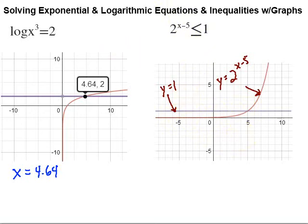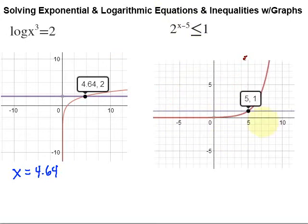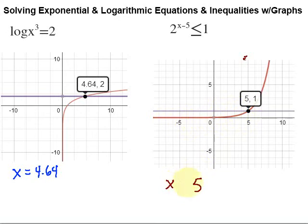Let me bring in that last piece. Using your graphing utility, find where those lines cross. That intersection point is (5, 1) — so we're at x equals 5, y equals 1. If I take the x-values where the red line is lower than the purple line, that's from x equals 5 going left. So the solution is x is less than or equal to 5.